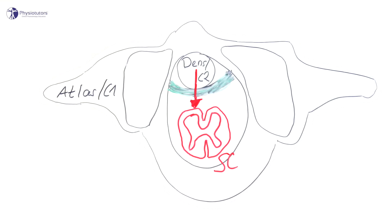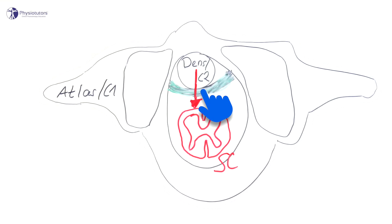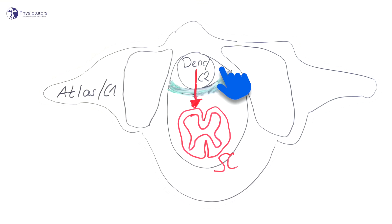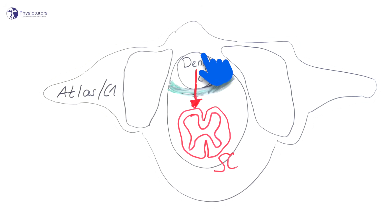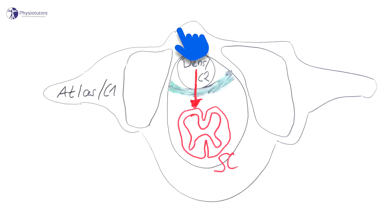The Sharp Purser Test is designed to test the transverse ligament of the Atlas, which ensures that the dens of the axis of C2 stays in touch with the anterior arch of the Atlas.